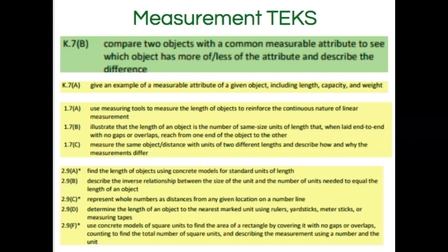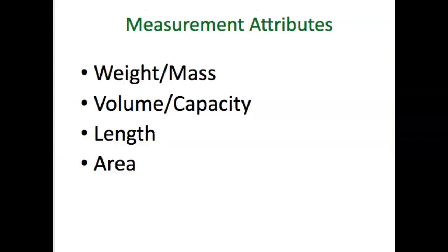Measurement continues up through the grade levels, getting much more complicated when converting units within the same system. In sixth grade, students also convert between systems — between metric and customary. The key attributes of measurement are weight or mass, volume or capacity, length, and area. In each one, there are units in the metric system as well as the customary system. Children need to be familiar with both: inches, feet, yards, and miles are customary, while centimeters, meters, and kilometers are metric.